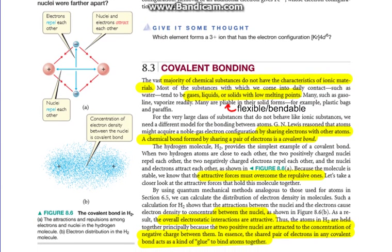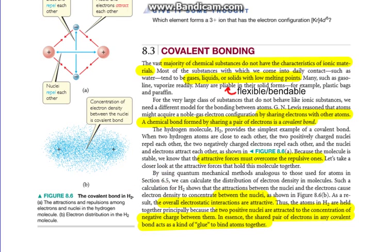In other words, the valence electrons of one hydrogen atom and another hydrogen atom concentrate in between the two nuclei. As a result, the overall electrostatic interactions are attractive. Thus, the atoms in H2 are held together principally because the two positive nuclei are attracted to the concentration of negative charge between them. Those electrons must be sitting in between there, holding it together. In essence, the shared pair of electrons in any covalent bond acts like a kind of glue to bind them together. So you have the negative part here, the positive from the proton, positive from the proton in the nucleus. The electrons in there act like glue almost.